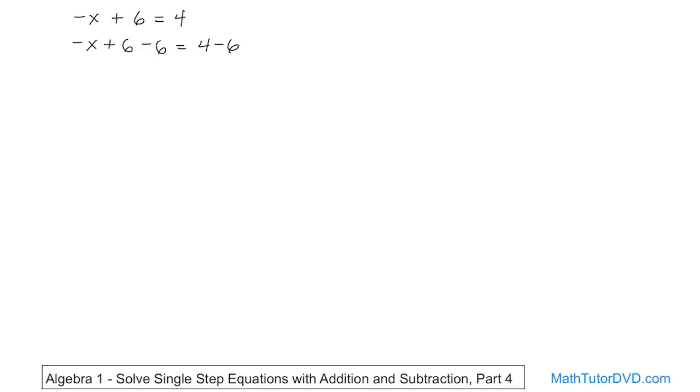Now when we do that, this goes to 0. So on the left, we still have negative x equals. And on the right-hand side, we have 4 minus 6.